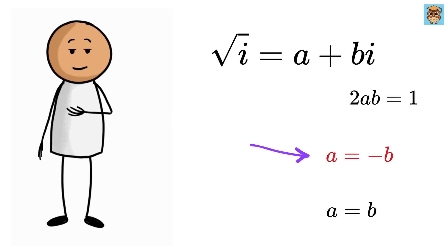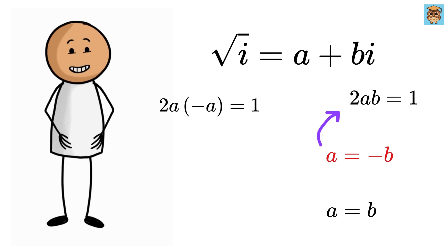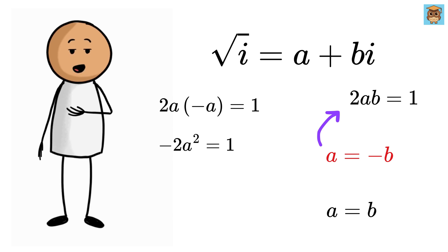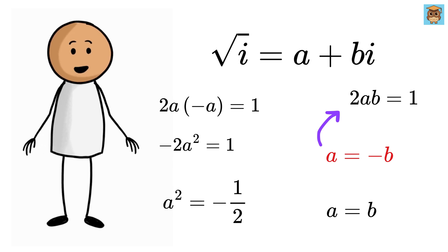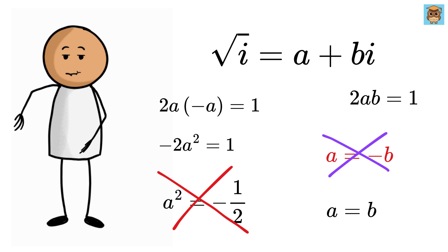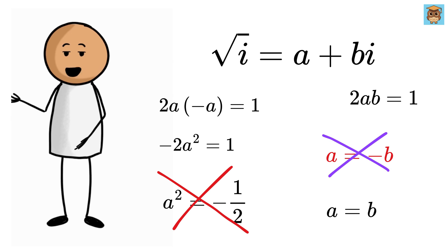Let us first look at a = -b. Put it here to get 2a × (-a) = 1. So -2a² = 1 or a² = -1/2. But this cannot be possible because we have already mentioned that both a and b are real numbers. Therefore, a = -b is invalid.